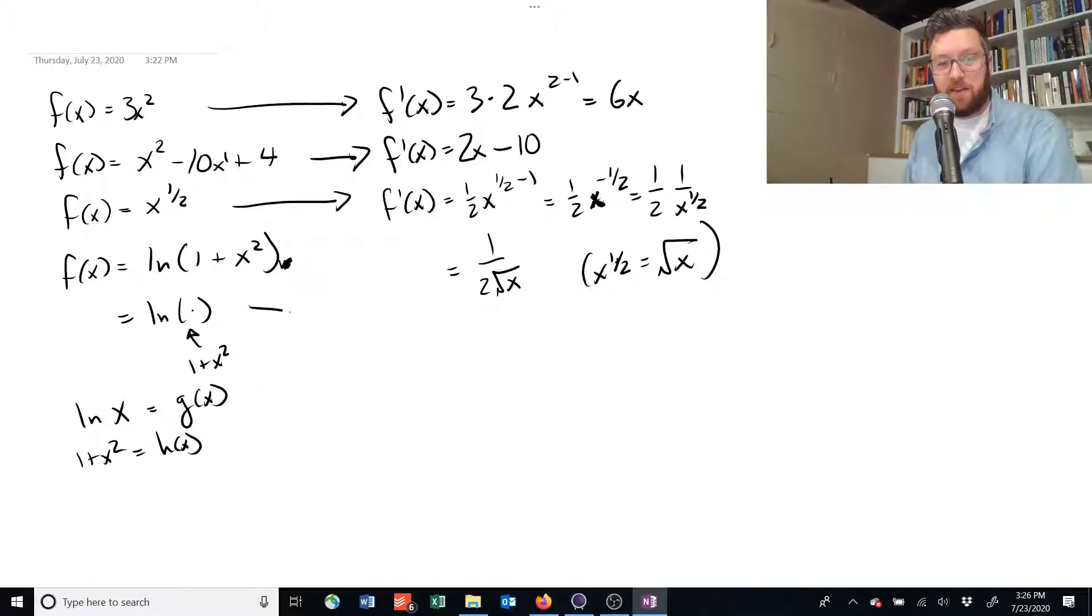we need to basically say that the derivative of this is equal to, the outer term is g of x. So, we'll take the derivative of that. Inside that is going to be, where'd it go? Our h of x. And then we're going to need to multiply everything by the derivative of h of x.